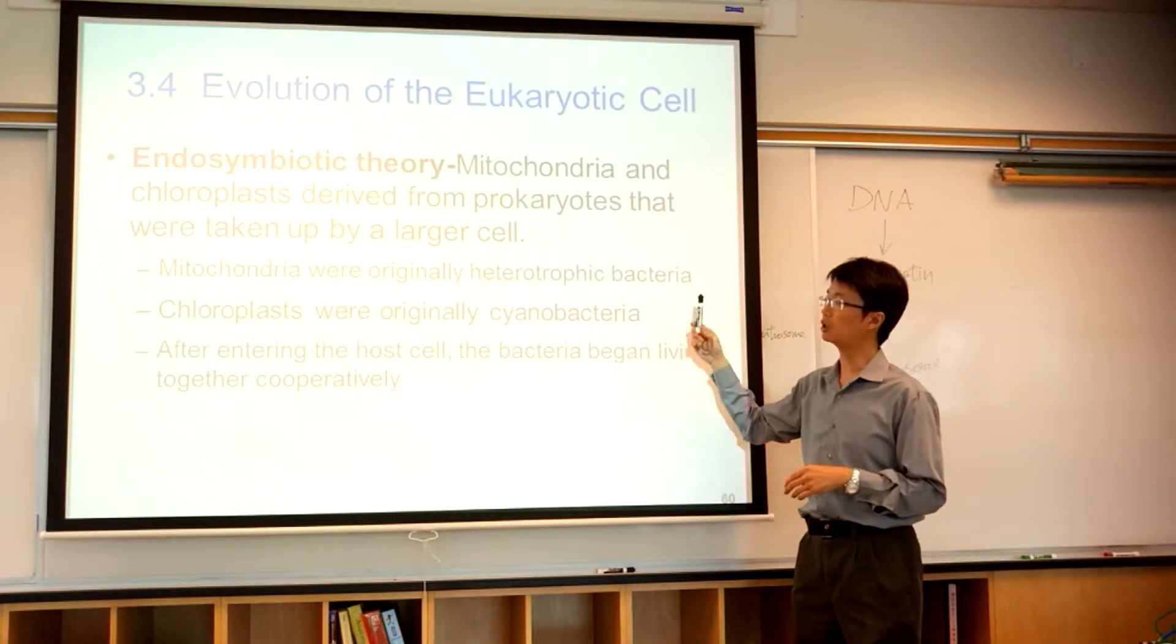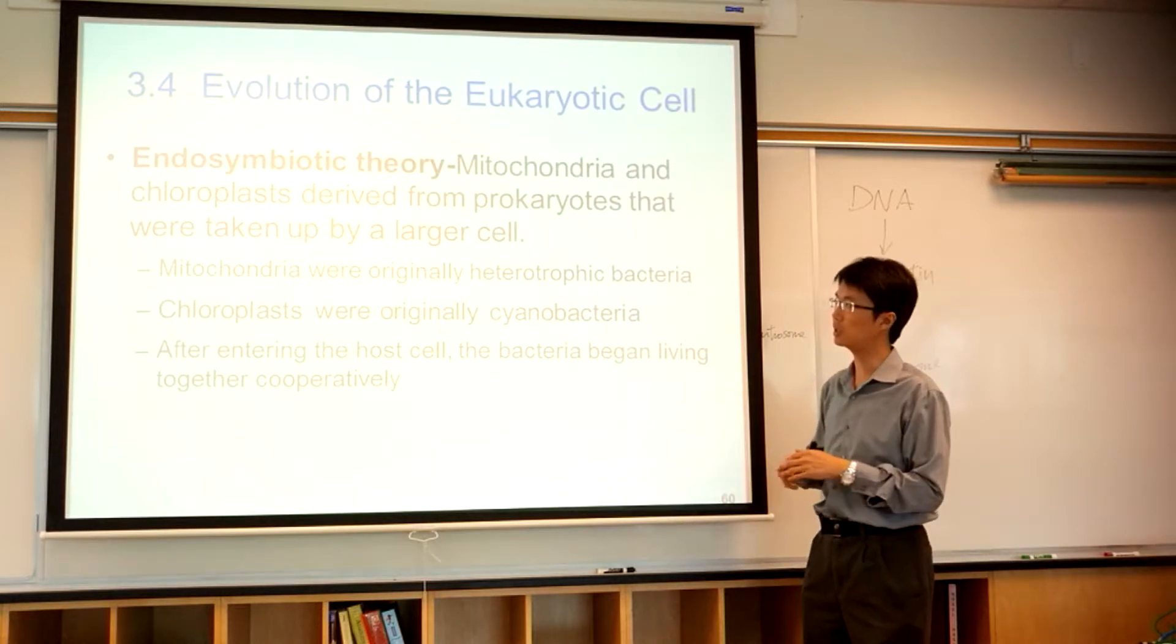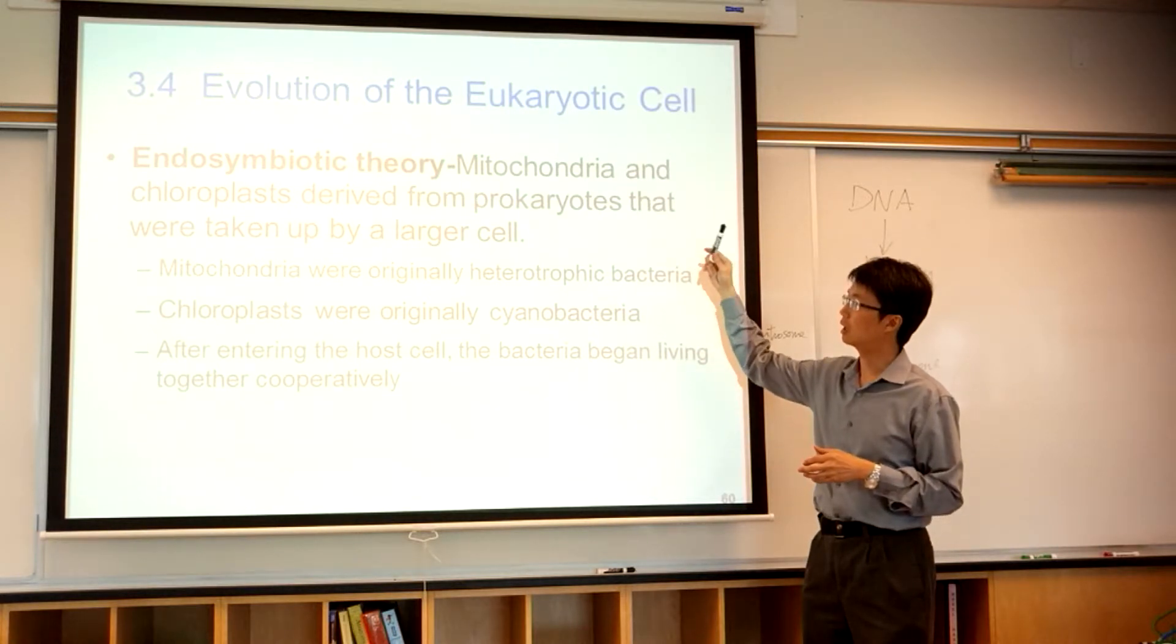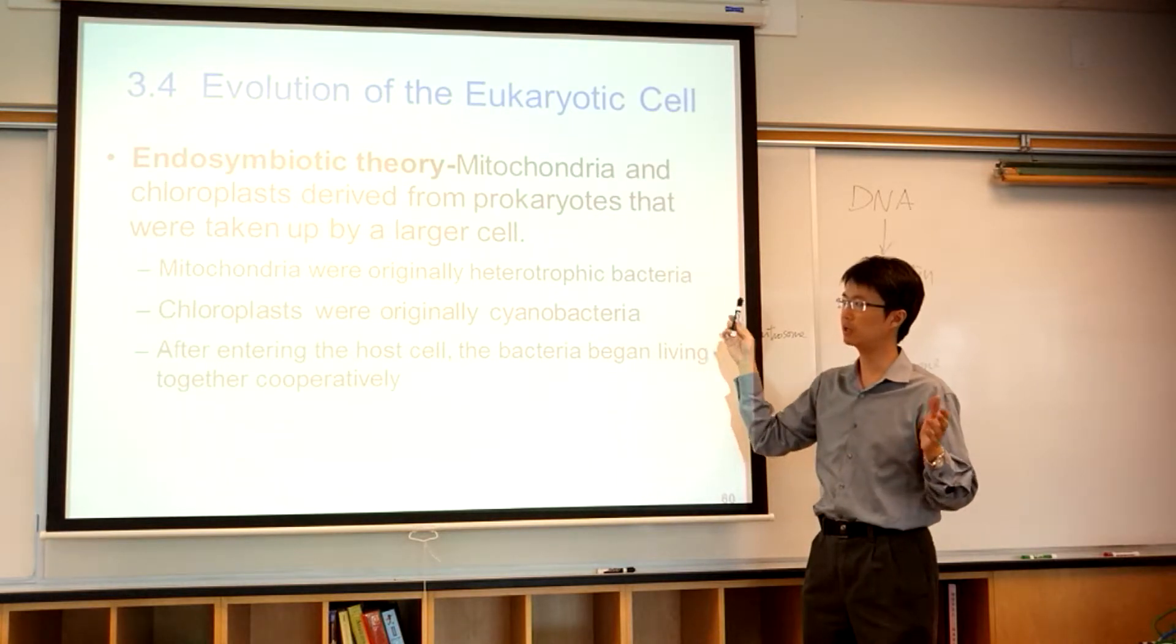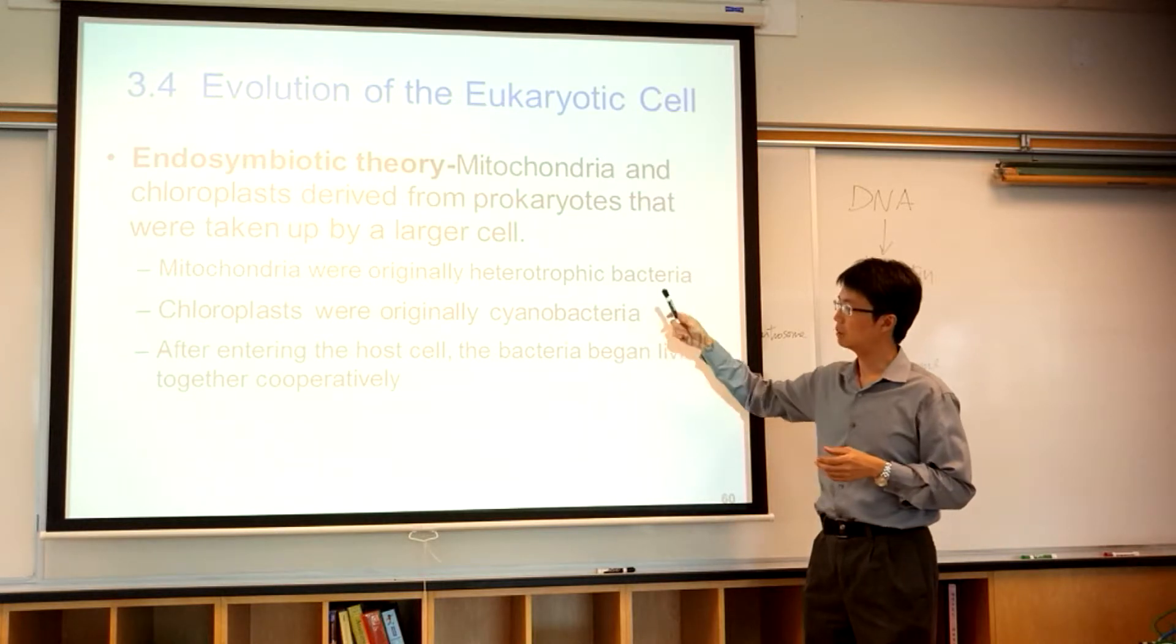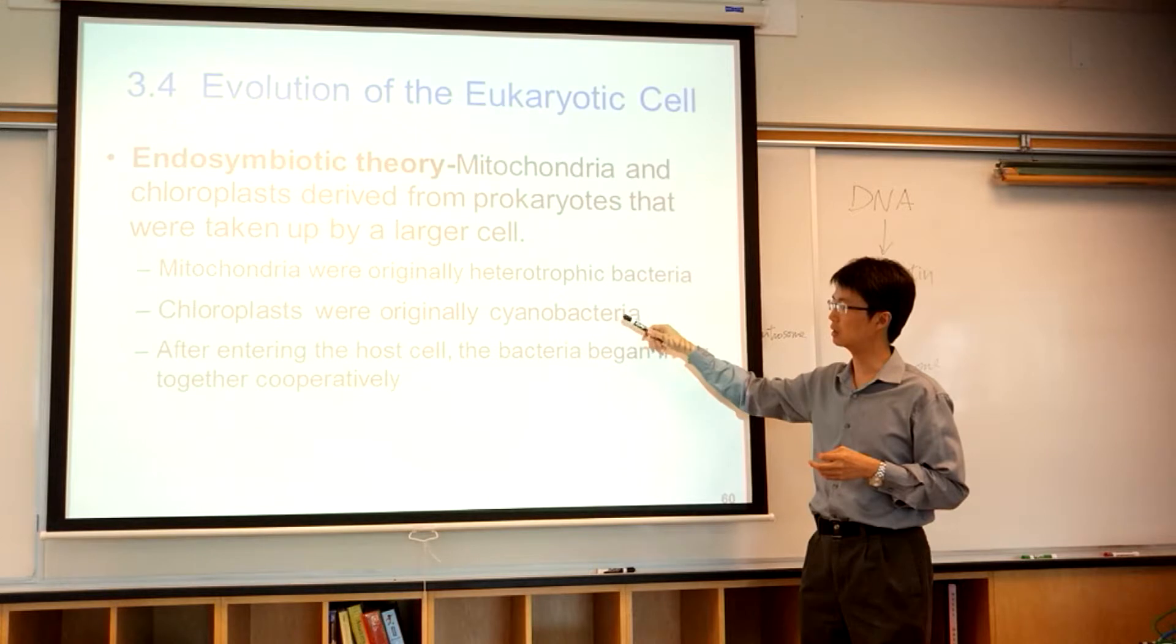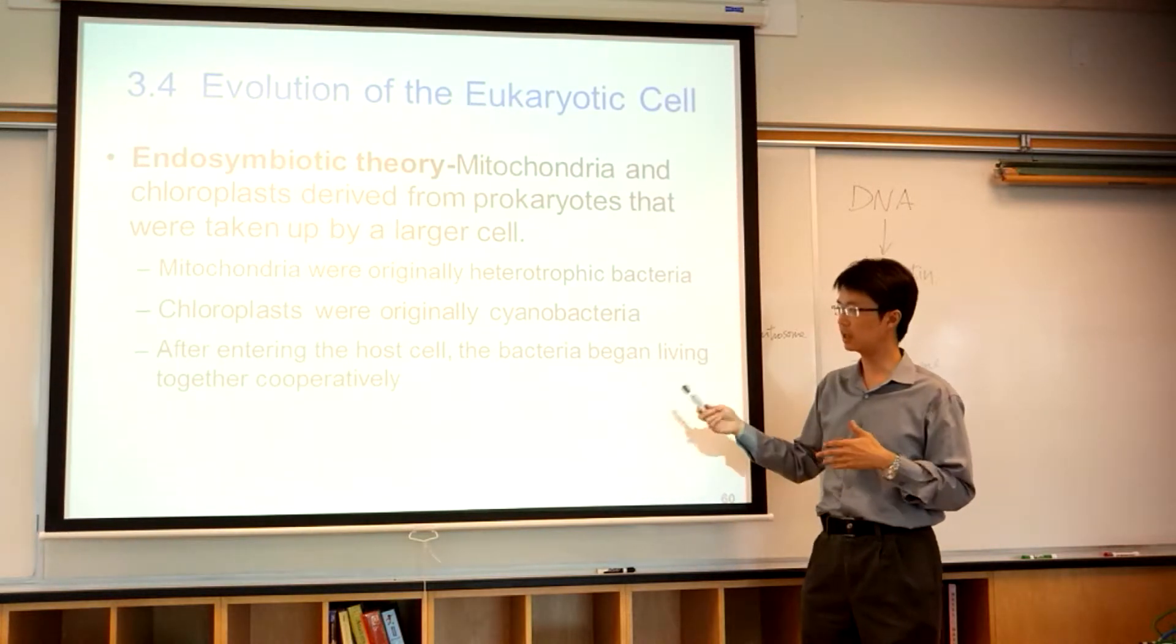So, this is what I told you about chloroplasts and mitochondria—endosymbiotic theory. Mitochondria and chloroplasts are derived from—we believe that mitochondria and chloroplasts, they are from prokaryote. It's just that we include them into our body. Mitochondria from heterotrophic bacteria, chloroplasts from cyanobacteria. They enter the host cell, and then they live cooperatively.